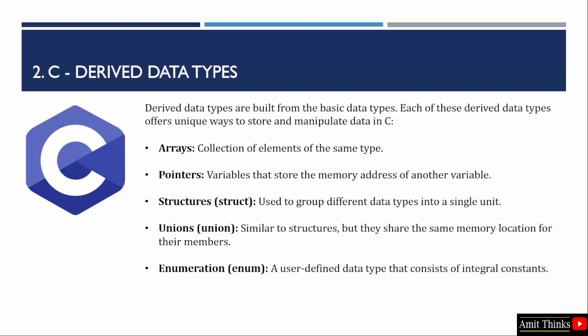Let us now see the derived data types. These are built from the basic data types only. They offer a unique way to store and manipulate data in C. Beginning with arrays, it is a collection of elements of the same type. Pointers store the memory address of another variable. Pointers allow you to directly interact with memory. They are variables that store memory addresses, typically the addresses of other variables.